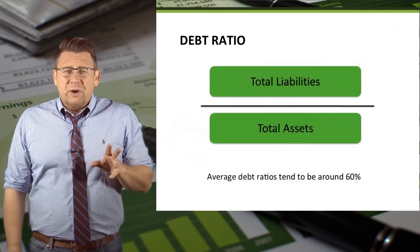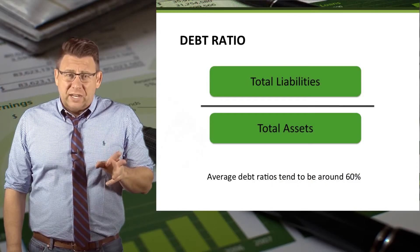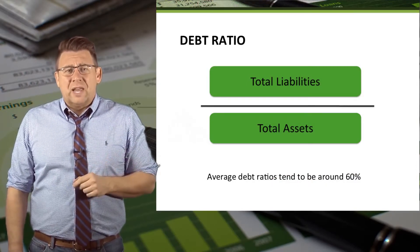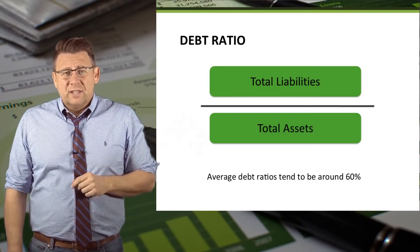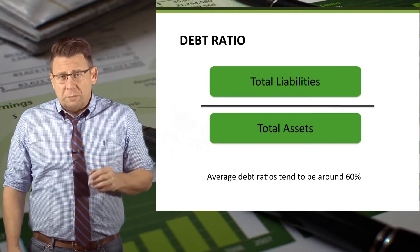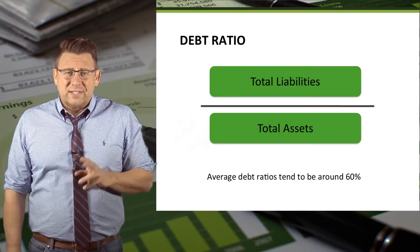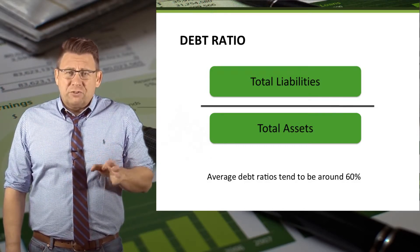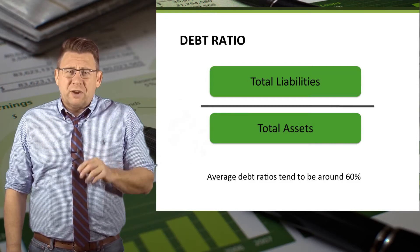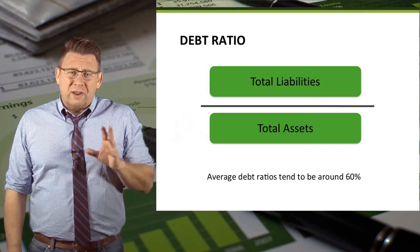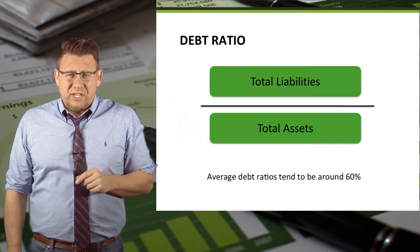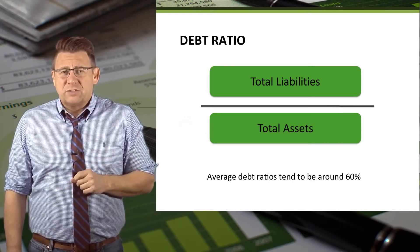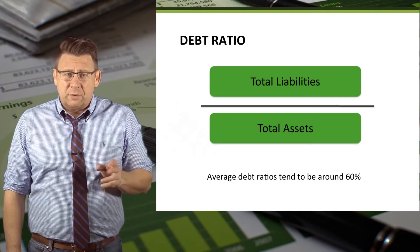The debt ratio is calculated as total liabilities divided by total assets. It tells us what percentage of assets are financed with debt. On average, most debt ratios are around 60%, as companies tend to finance more assets with debt than equity.